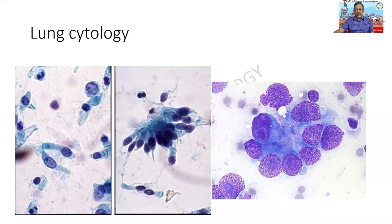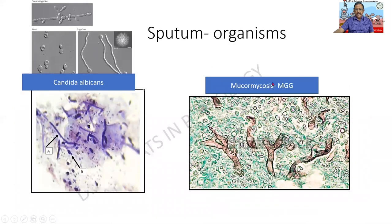So also squamous cell carcinoma, etc. This again is the sputum cytology. In this case, I am able to find broad aseptate hyphae that can be diagnosed by means of a silver stain called the May-Grünwald-Giemsa, and it is mucormycosis. These are all opportunistic infections which can occur in our body. And this is a pseudohyphae — it is not a true hyphae. It is a pseudohyphae which can be seen in a disorder called Candida albicans.